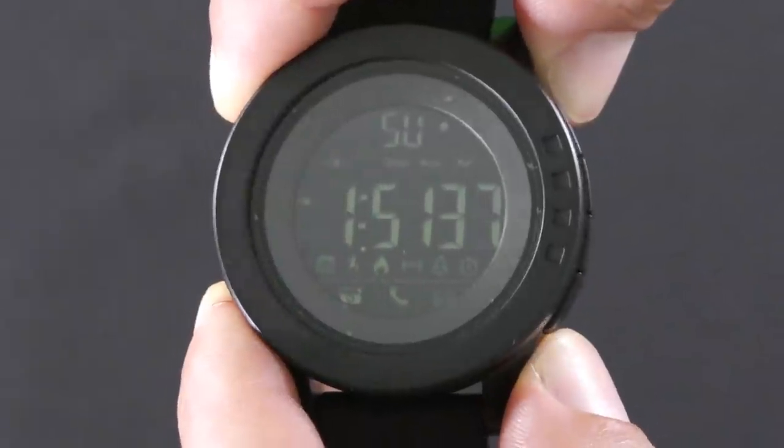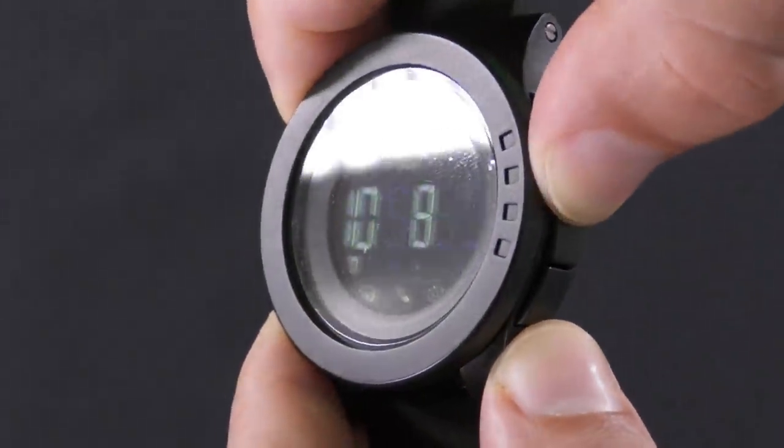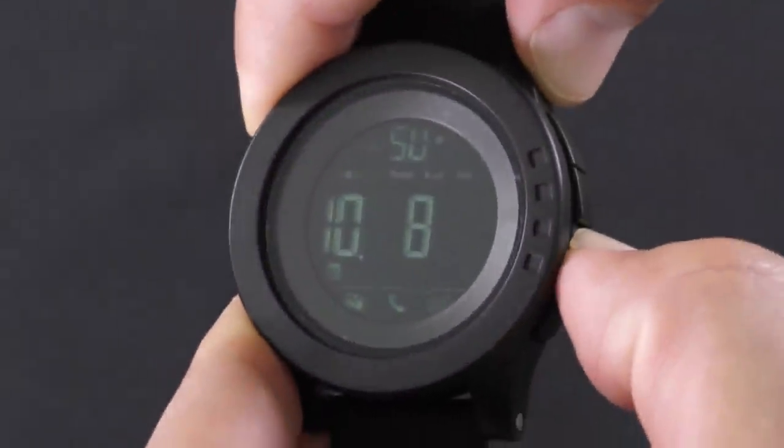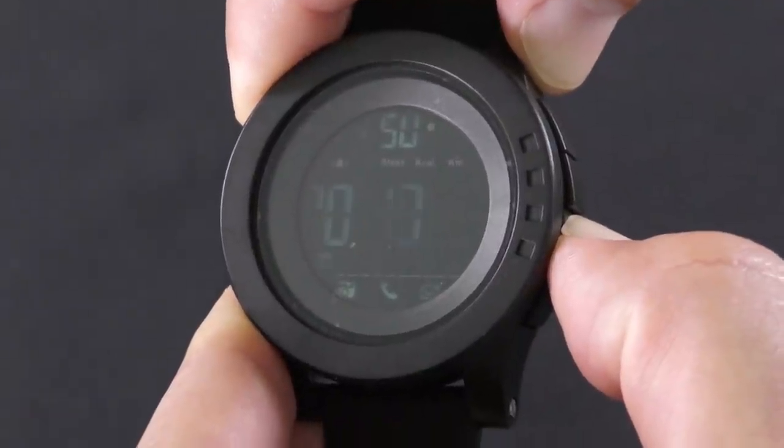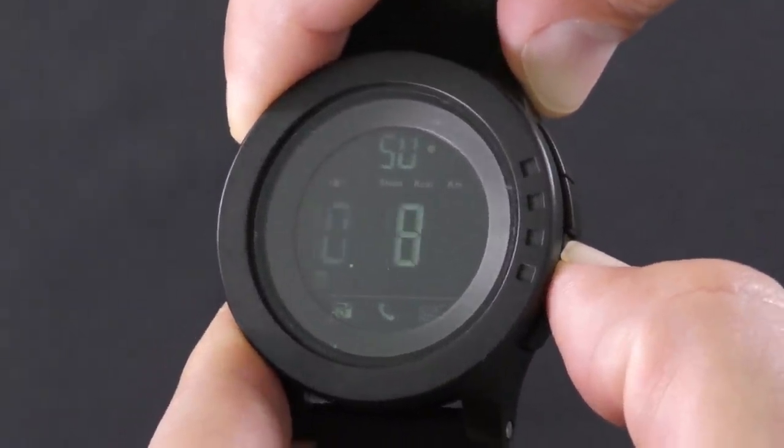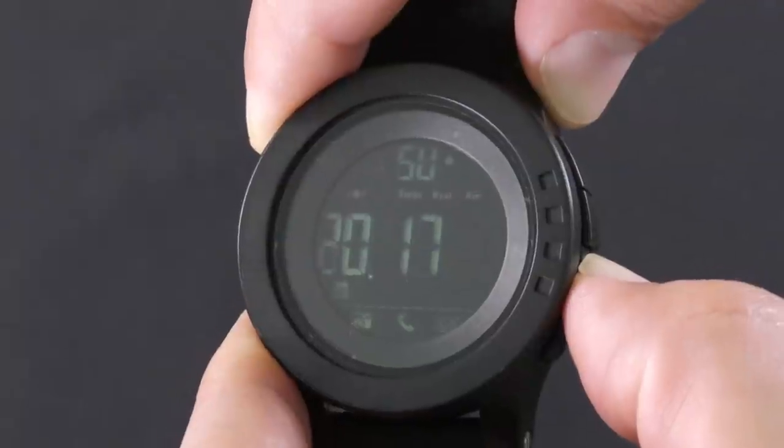If you want to adjust the date, press button number three once, then hold button number two for three seconds. To switch between the day, month, and year, press button number two, and to define them press button number one.